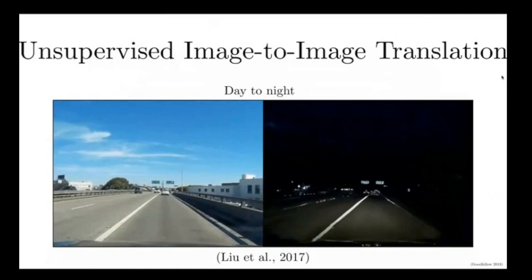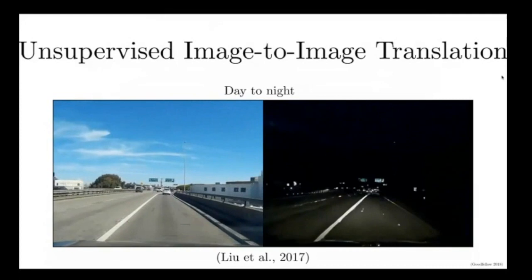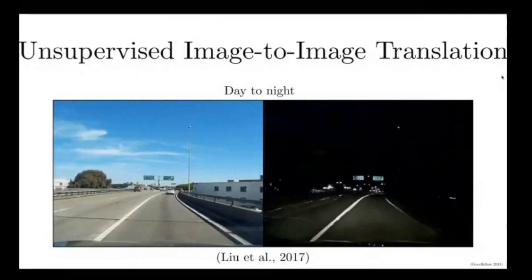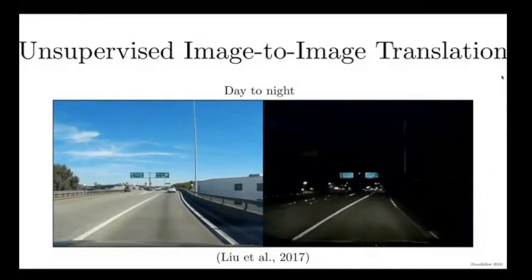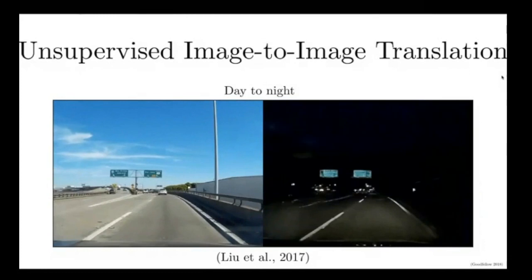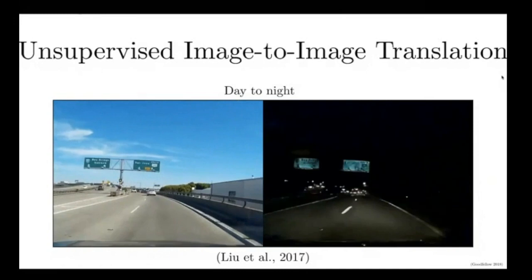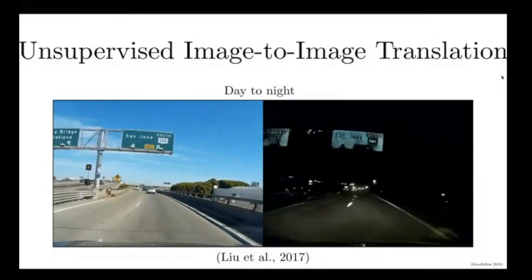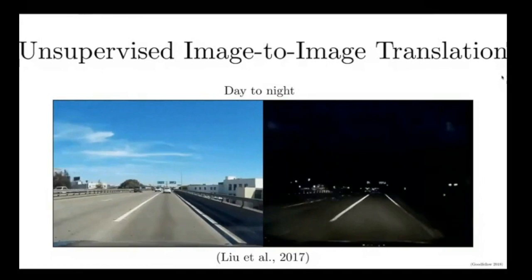If you think about how challenging it would be to collect the training data for this, you see that there would be a lot of logistical challenges with no obvious way of being overcome. If you wanted to make a collection of training data with a pair of an image in the daytime and the same image at nighttime, repeated millions of times over, for every day image you would need to record all of the cars on the road, where they were, what direction they were traveling, and so on — and then get all those cars to come back to the same place and reenact exactly the same video sequence at night. That's how traditional supervised learning would need the data prepared in order to solve this problem.